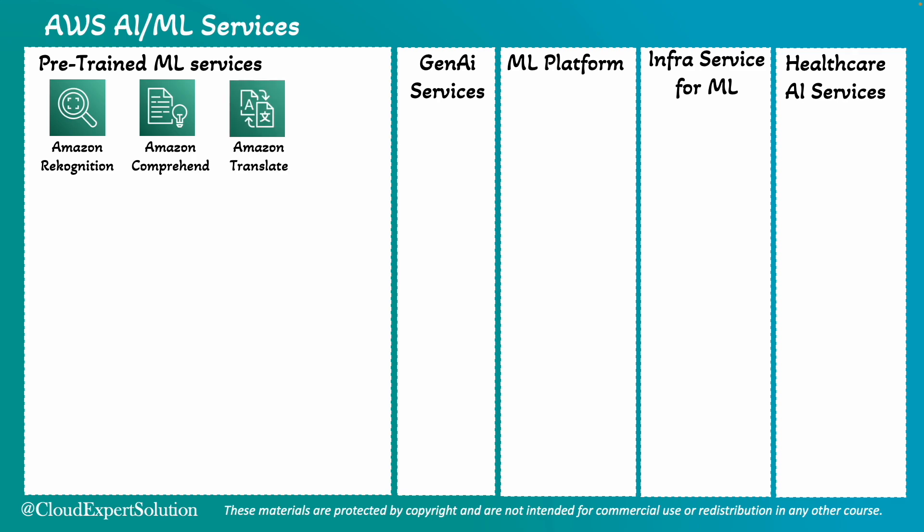Amazon Translate is used for language translation. An example could be an e-commerce website using Amazon Translate to provide product descriptions in multiple languages.